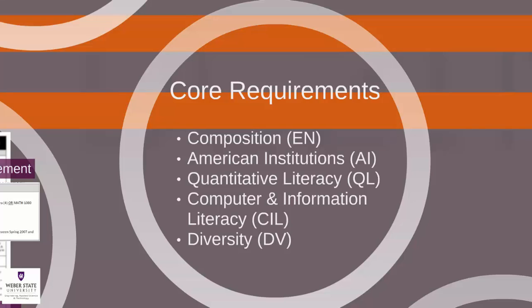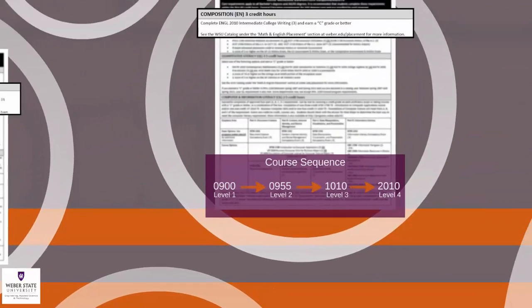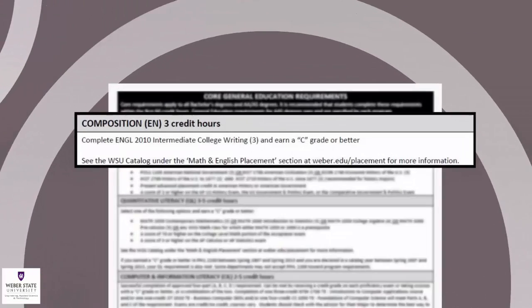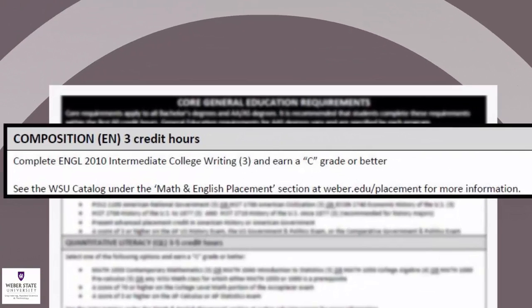The core requirements include English, American institutions, quantitative literacy, computer information literacy, and diversity. The first requirement under the core is your composition or English. Students at Weber State must complete English 2010 with a C or better to fulfill this requirement.